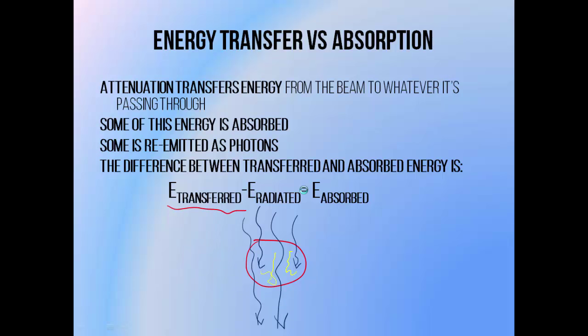We're going to talk about this in more detail in the next tutorial. The secondary electrons don't necessarily deposit all of their energy via collisions — sometimes they re-emit their energy as a photon, which can escape from the tumour volume. In this case, it's termed a radiative loss. The energy that secondary electrons use to cause ionisation via collisions is what causes most of the tissue damage in radiotherapy, and is therefore the quantity we're most interested in. This energy absorbed equals the energy transferred to secondary electrons minus the amount that escapes as re-emitted photons.